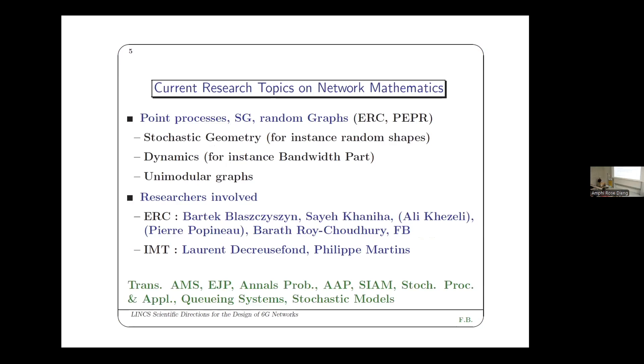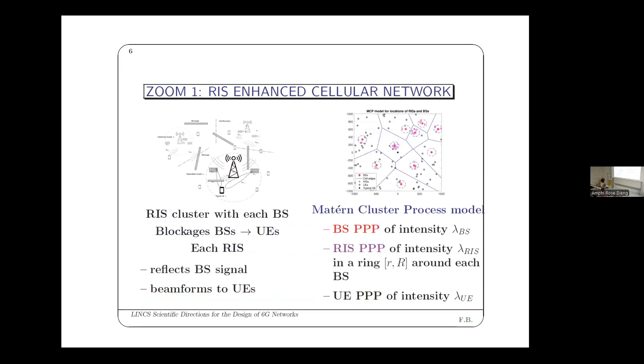I add to that, and I think we should see this as a continuum, all the research on network mathematics: stochastic geometry, dynamics, queuing, random graphs. The researchers involved for the ERC part are Bartłomiej Błaszczyszyn, Ali Khezeli, Pierre Popineau. We developed the tools that we use for understanding all these topics and I think we should see this as a continuum.